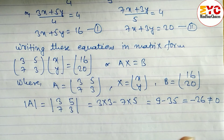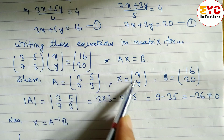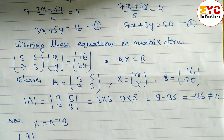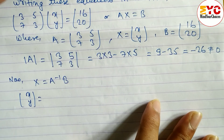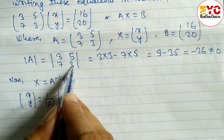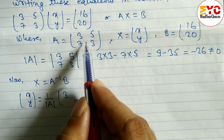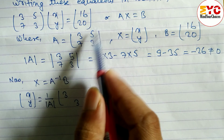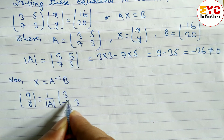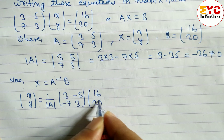Now we find x = A inverse × B, so x y = A inverse × B. To find A inverse, the formula is 1 over determinant A, then we interchange the diagonal elements — keeping 3 and 3 — and change the signs of the non-diagonal elements to get minus 7 and minus 5. B is equal to [16; 20].